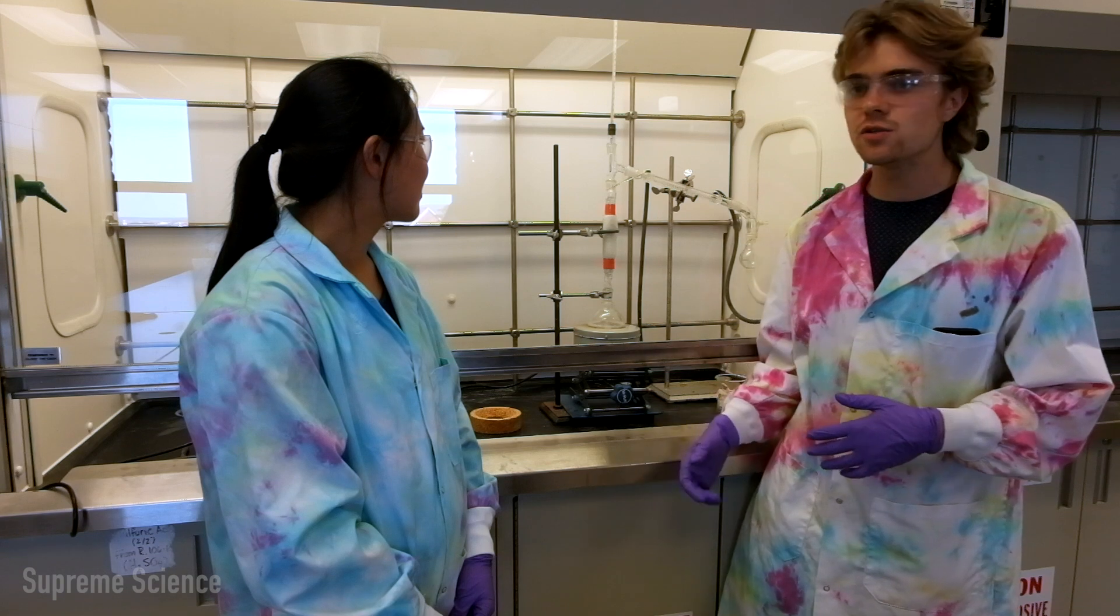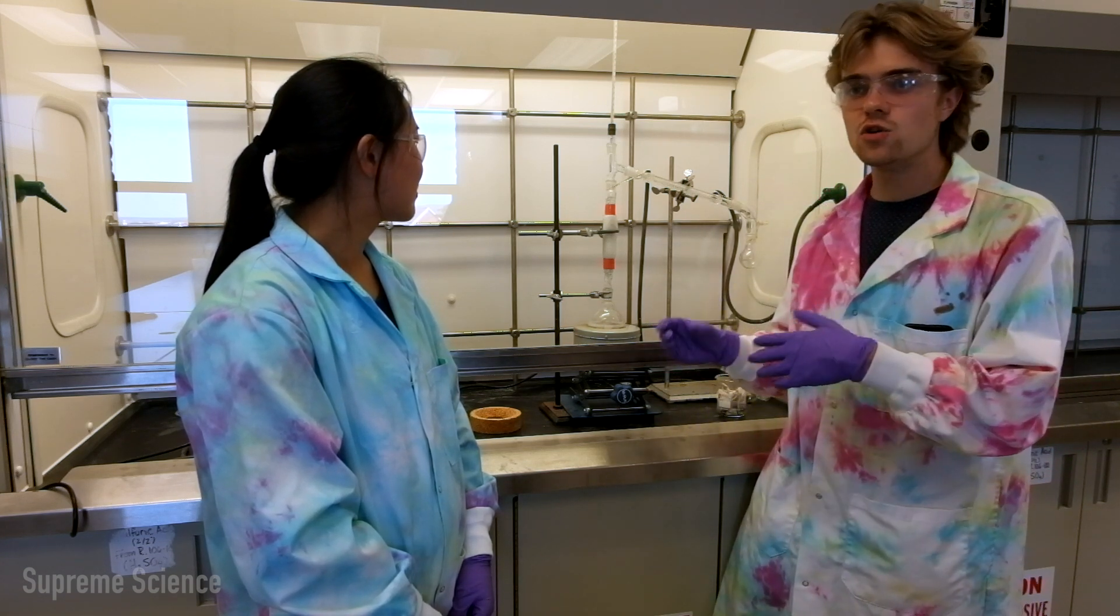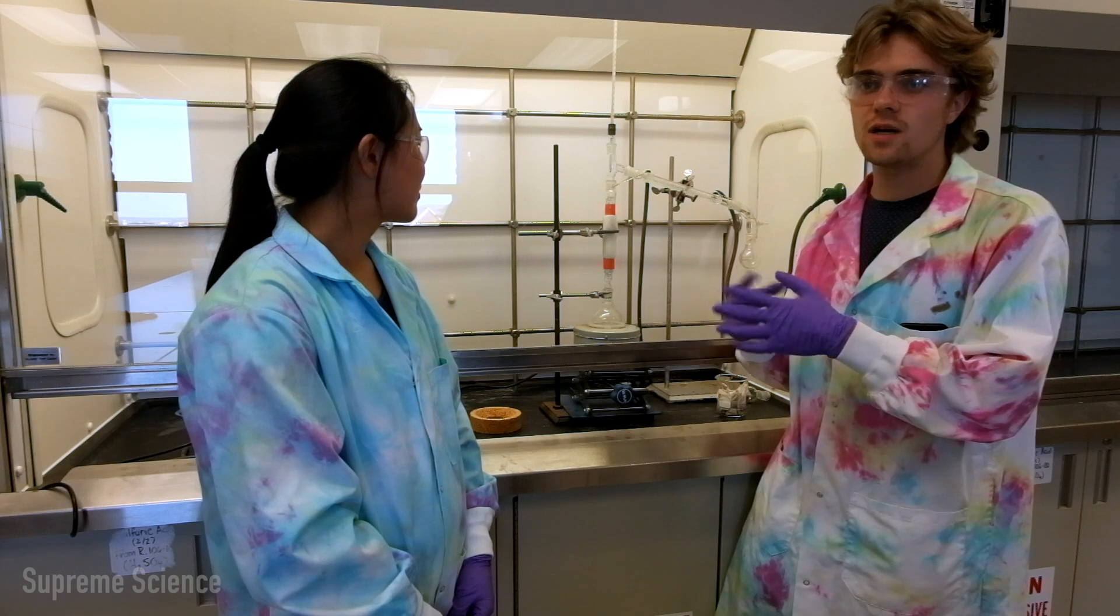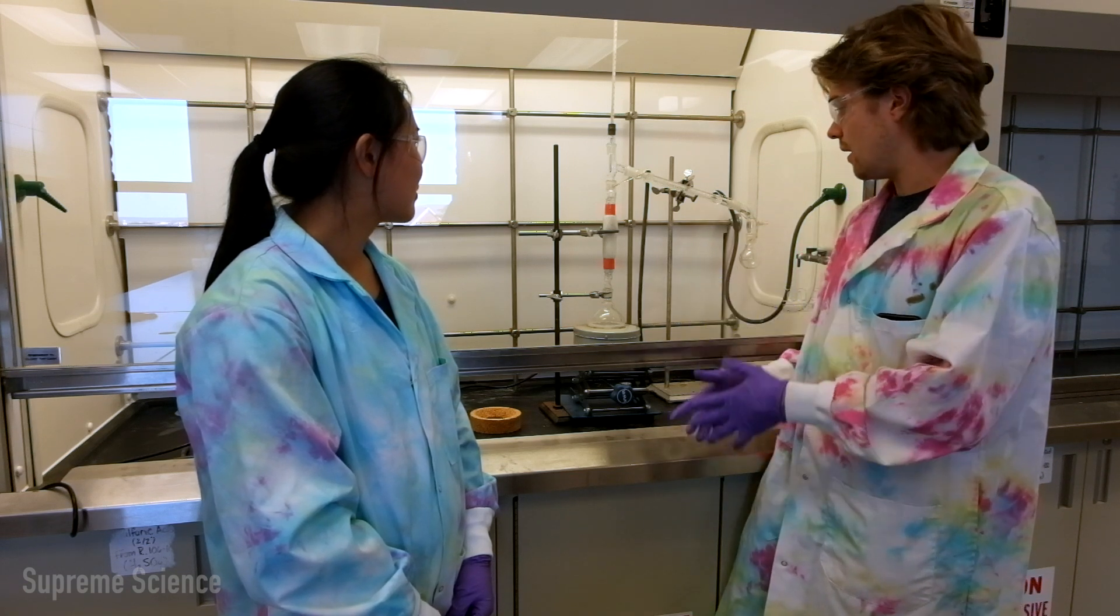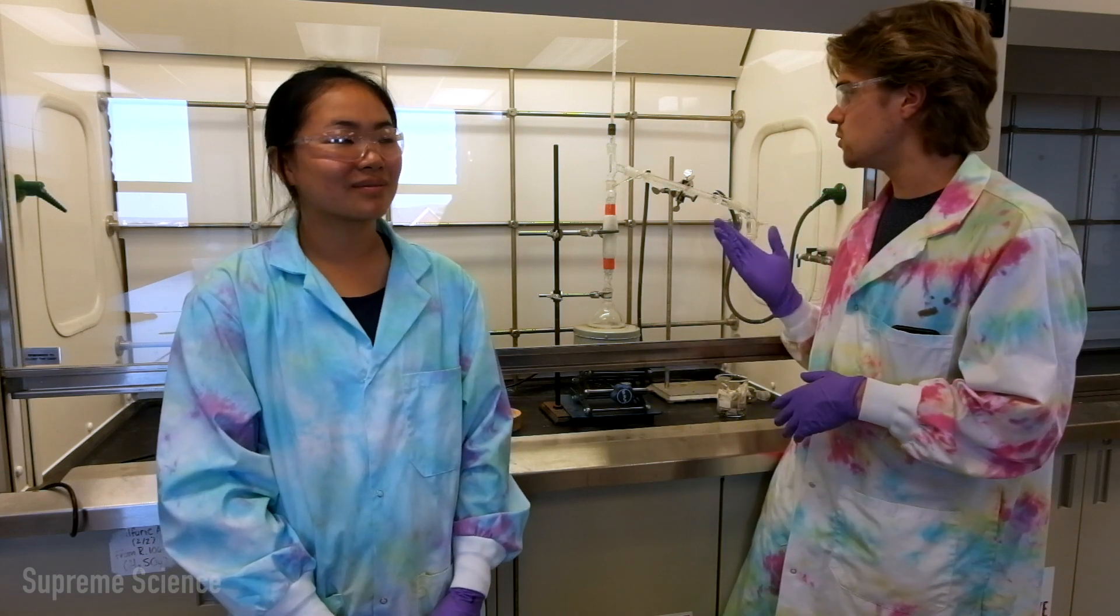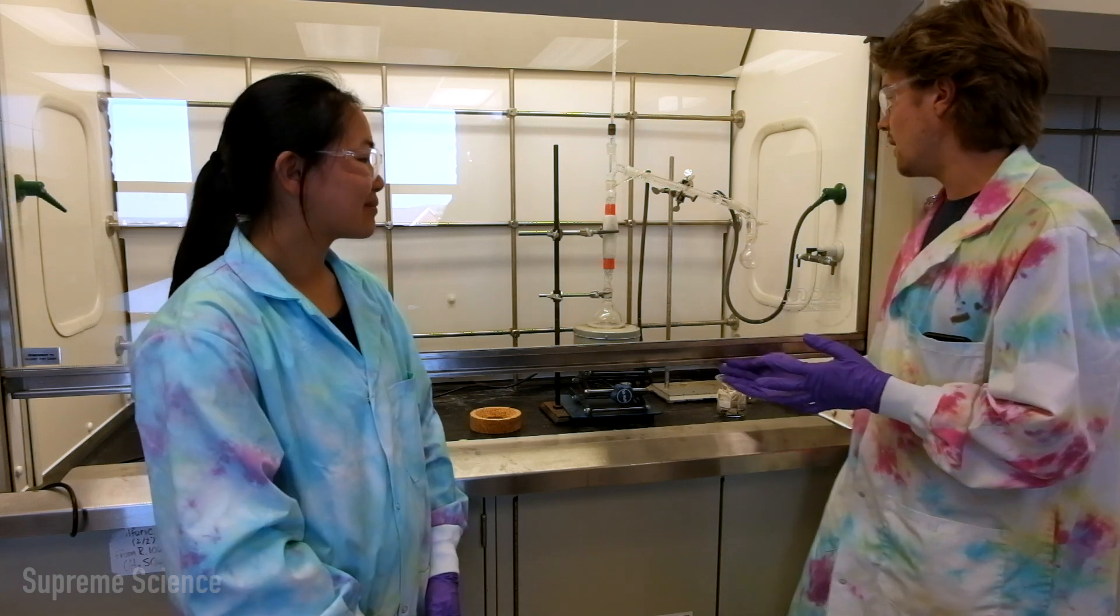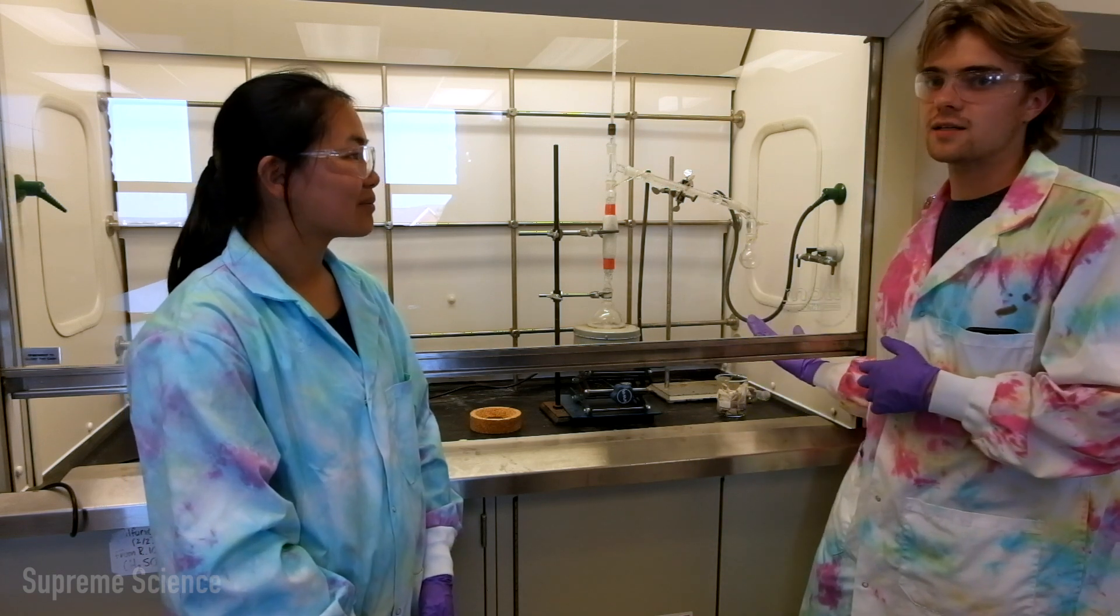And this process continues. So condensation occurs, the vapor mixes, new vapor mixes with the condensation to create a new vapor mixture, and then it evaporates further up the column. So when we reach the top of the column, the lower boiling point component is going to be the first to reach the top of the column and come down our condenser and end up in our receiving flask.